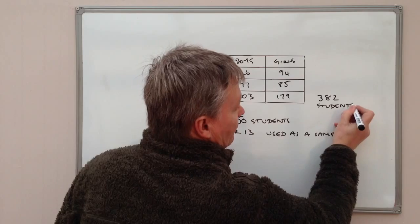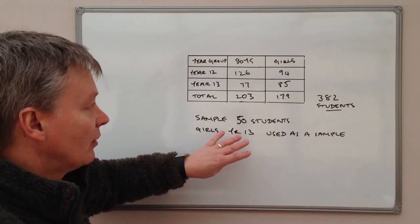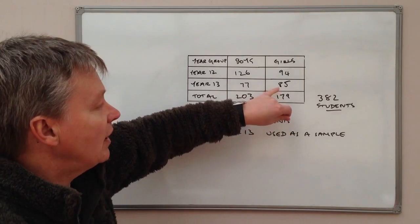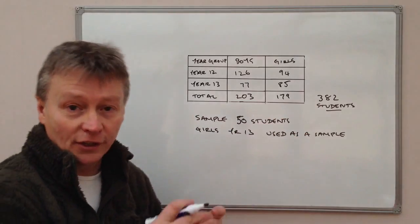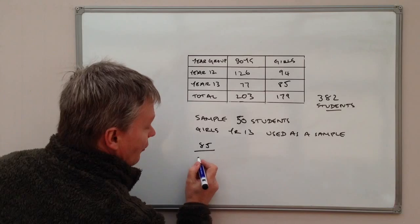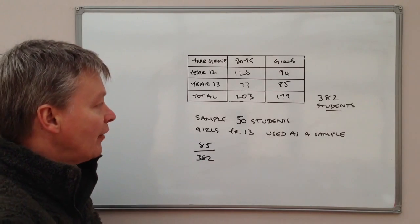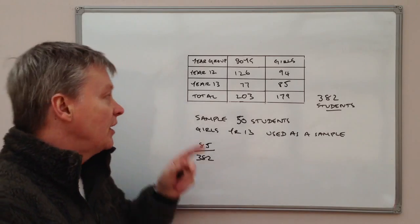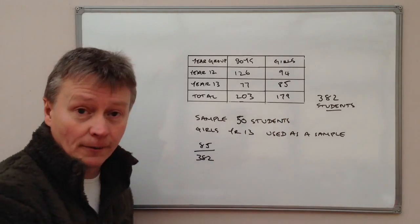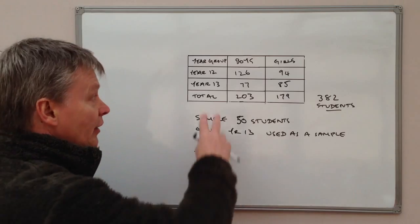That's really important because the amount of girls that we're going to sample in year 13 will be, if I was sampling the whole 382, I would be looking at 85 out of 382 students. So in other words, if I had the resources available to do the whole year 12 and year 13 grouping, I would do the whole 382 and out of those 85 of them will be girls in year 13.